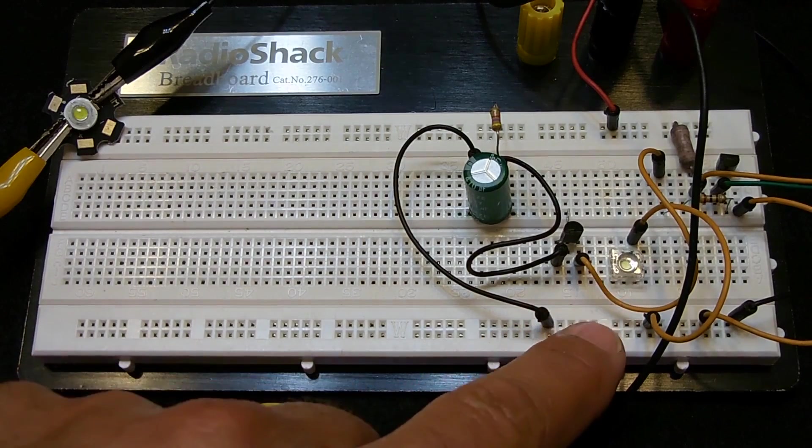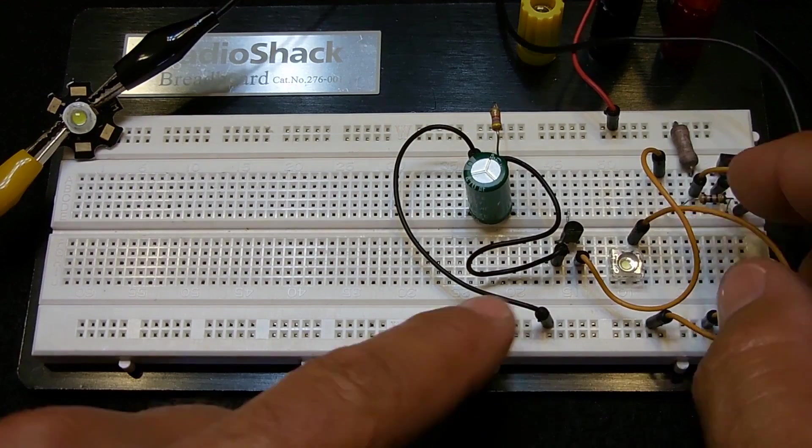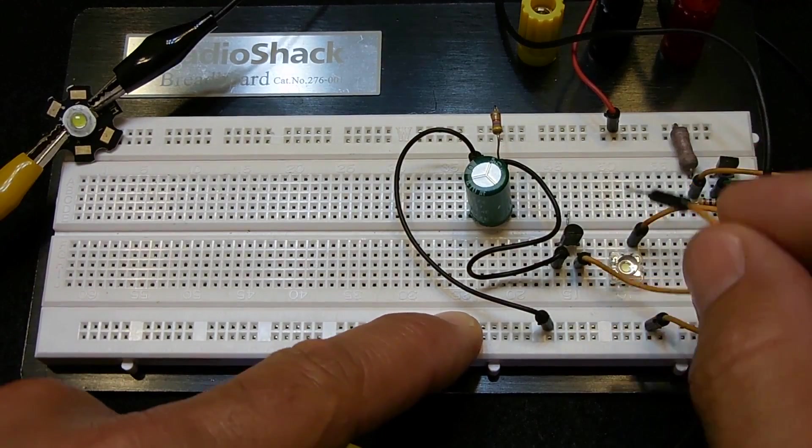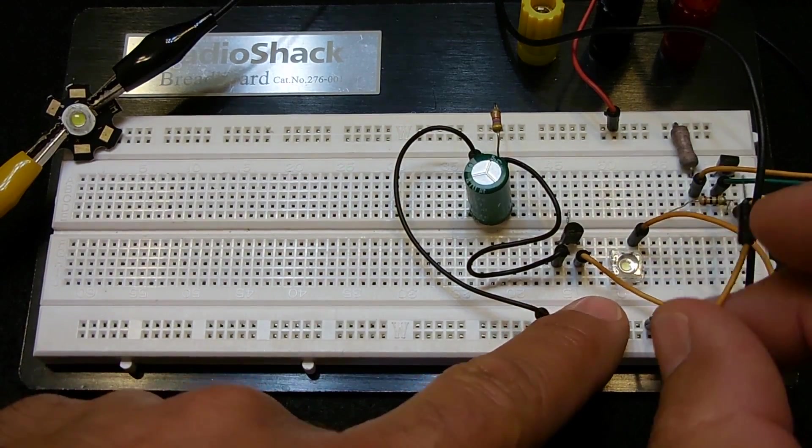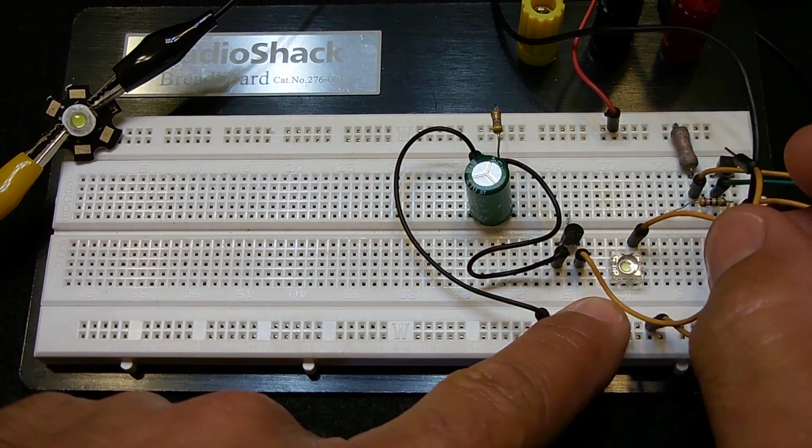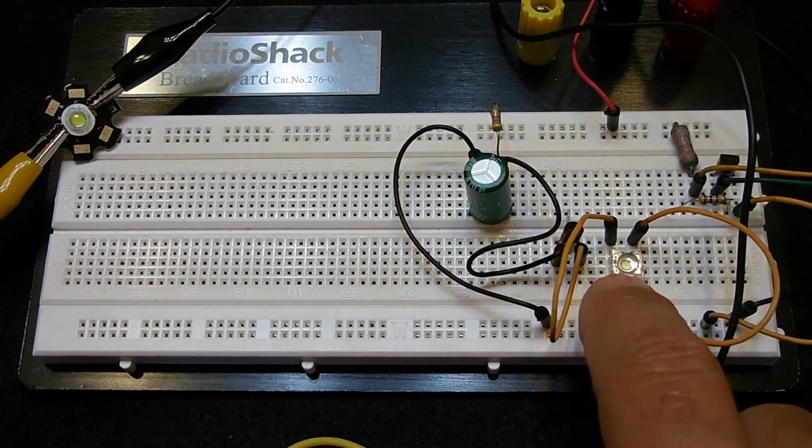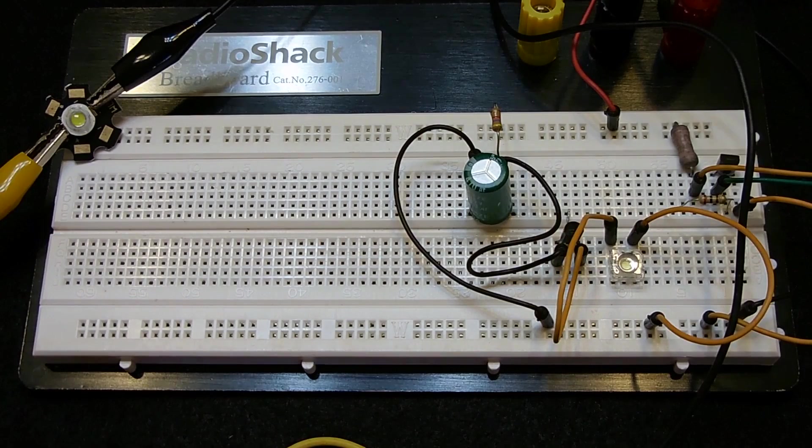And what I'm going to do first is go over here, and we're going to take this part of the circuit off, because this is taking the low-current version and making it the high-current version. So I'm going to put this back right over there. So now it's going to be flashing this LED.